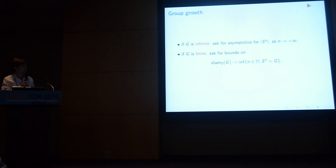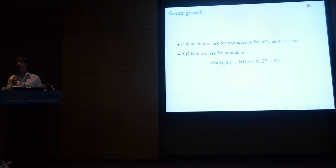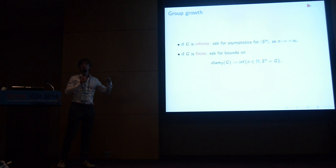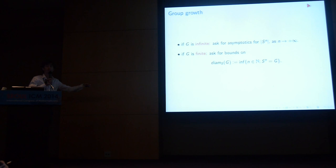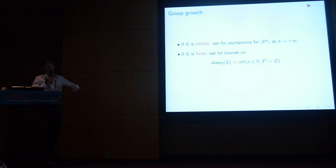In group theory, the finite and infinite group cases are very connected. If you know something about a finite group you can learn something about an infinite group — for example, if you have a linear group you can reduce mod p and get information on finite quotients. Conversely, if you want to understand a class of finite groups, you can construct a limiting infinite group and study it to derive properties of the finite groups.